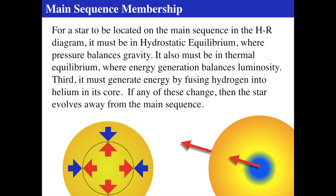The star also has to be in thermal equilibrium, meaning whatever energy is produced in the core gets emitted at the surface. The core must stay roughly the same luminosity so that the surface luminosity stays constant. However, if you change any of this, the star will evolve away from the main sequence and over time change its position on the HR diagram.